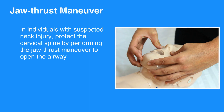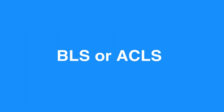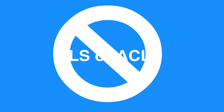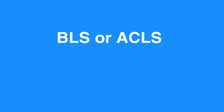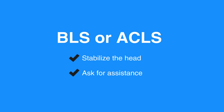In individuals with suspected neck injury, protect the cervical spine by performing the jaw thrust maneuver to open the airway. While standard practice in a suspected neck injury is to place a cervical collar, this should not be done in BLS or ACLS. Cervical collars can compress the airway and interfere with resuscitation efforts. As a provider, you must ensure an open airway regardless of the basic airway used. It is your responsibility to stabilize the head or ask for assistance while maintaining control of the airway.